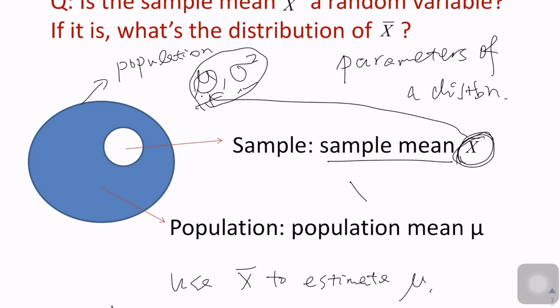Each random variable has a distribution. For example, the height of American people can follow a normal distribution with parameters mu and sigma squared. Now we use x-bar to approximate mu, which raises an important question: is x-bar random or is it a fixed number?